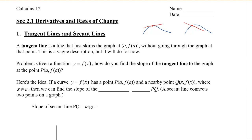Here's the idea. We know how to find the slope between two points. So let's say we have a curve y equals f of x with the point P, a, f of a, and a nearby point Q, x, f of x, where x does not equal a. Then we can find the slope of this line, which is called the secant line PQ. So the slope of the secant line PQ would be f of x minus f of a, all divided by x minus a.